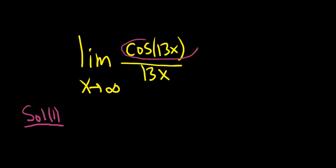And the top piece, cosine of 13x, is trapped between negative 1 and 1. The cosine function can't get bigger than 1, and it can't get smaller than negative 1. It's a wave function. So this limit should just be 0 because the bottom is getting really big.